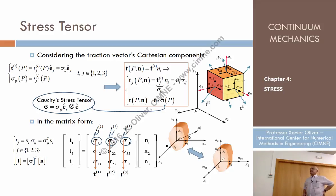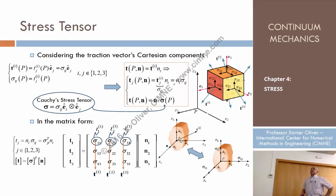Let's consider that I have a traction vector. For instance, T1 — I recall that T1 is the traction vector at point P. Let's change the name of the point; instead of the previous label, let's call it P. So, T1 is the traction vector at point P on a plane whose normal is E1.